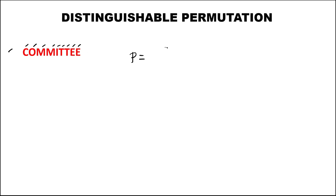So we have 1, 2, 3, 4, 5, 6, 7, 8, 9 — so this is 9 factorial, then over — we need to list all the repeated letters.